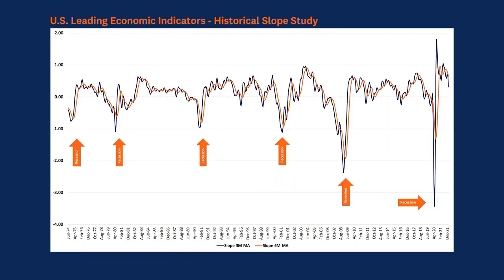Today, many of the components of LEI are relatively strong, leading us to believe that a U.S. recession may not be in our immediate future. To get a keener look at LEI, we also track the slope of this index to determine the momentum behind the economy. This illustration tracks the three-month and six-month moving average of the index slope to pinpoint the time at which the momentum in the index has completely turned.